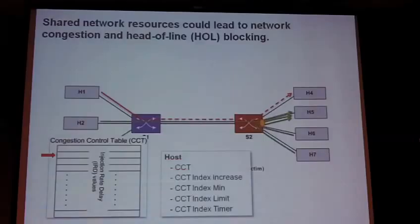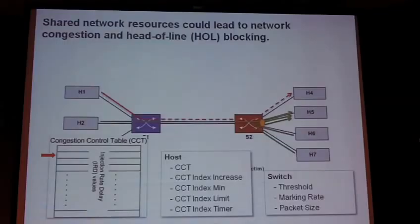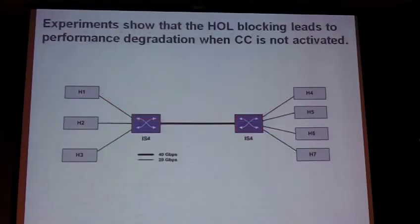The settings for InfiniBand congestion control are specified in the standard. On the host side, the most important are the congestion control table and the timer. On the switch side, we have the threshold, the marking rate, and the packet size, which govern how congestion is triggered in the switches. Basically, the switches look at queue fill rates and decide if a port should be considered congested. That's the basic theory — now let's take this into the lab and see what happens.